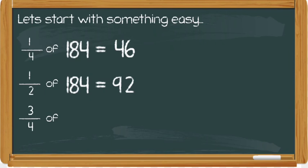That then means if I want to find three quarters of that number, I know that three quarters is the same as one half add one quarter. So I could add together 46 and 92. That would give me the answer of 138. So three quarters of 184 is 138.